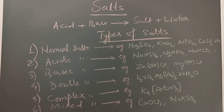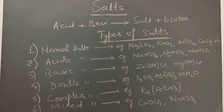Acidic salts are salts which contain replaceable hydrogen atoms, like NaHSO₄ (sodium bisulphate), sodium hydrogen phosphate, and sodium bicarbonate. These have a replaceable H⁺ ion, so they are called acidic salts.